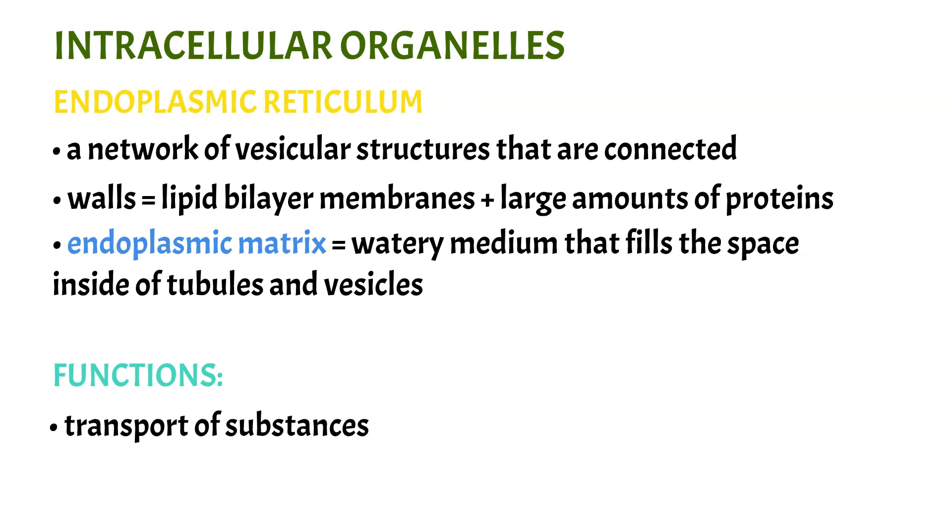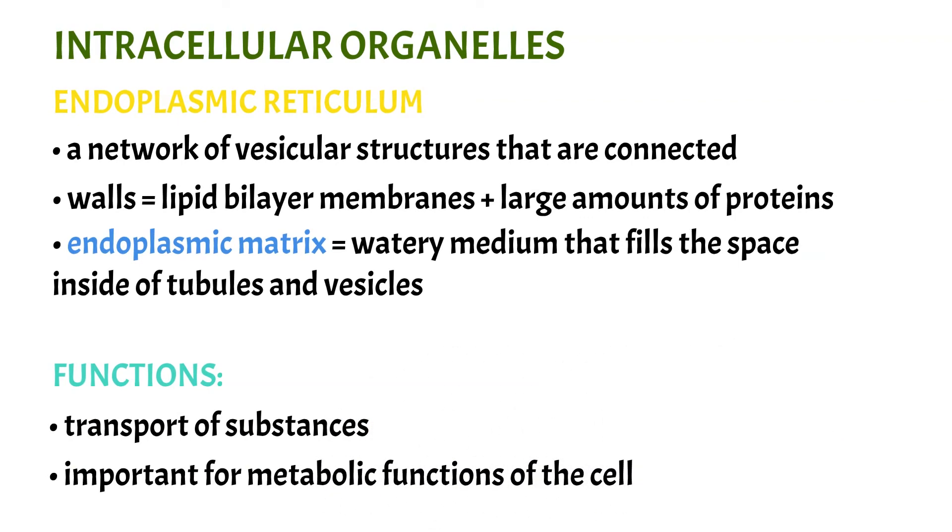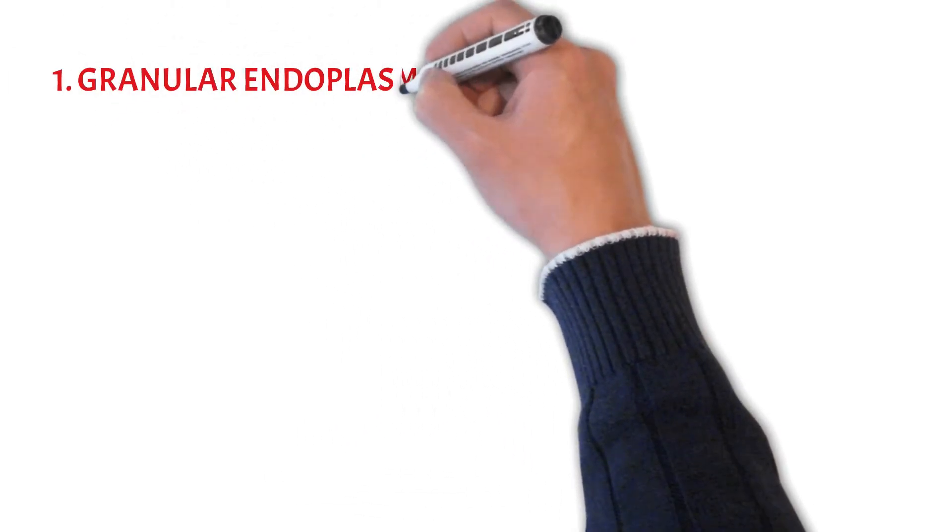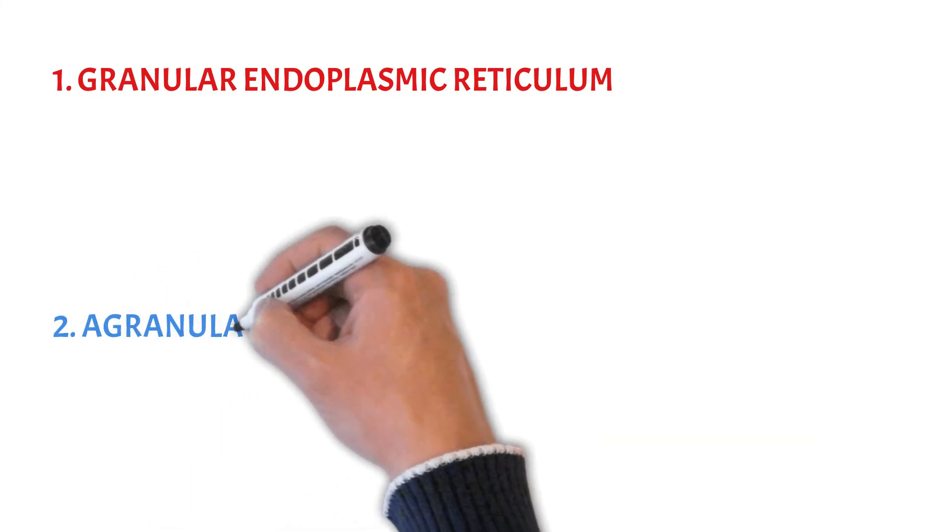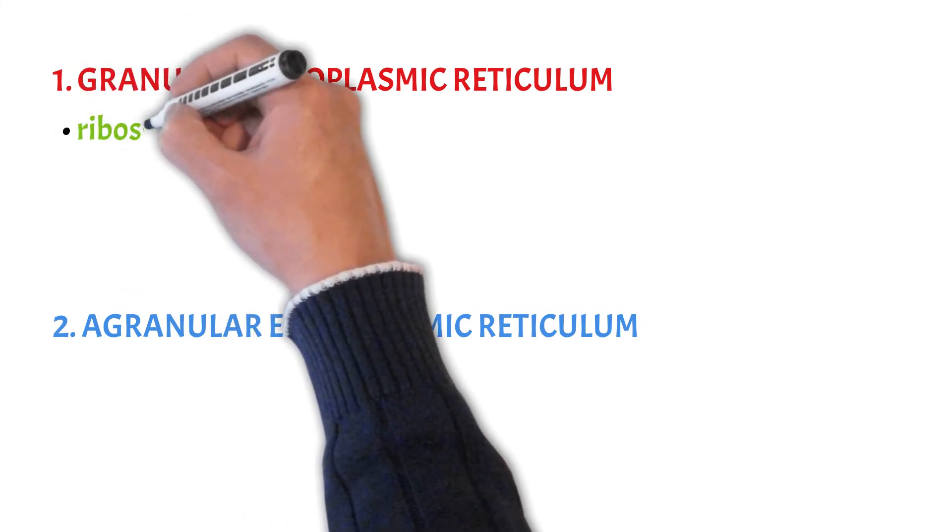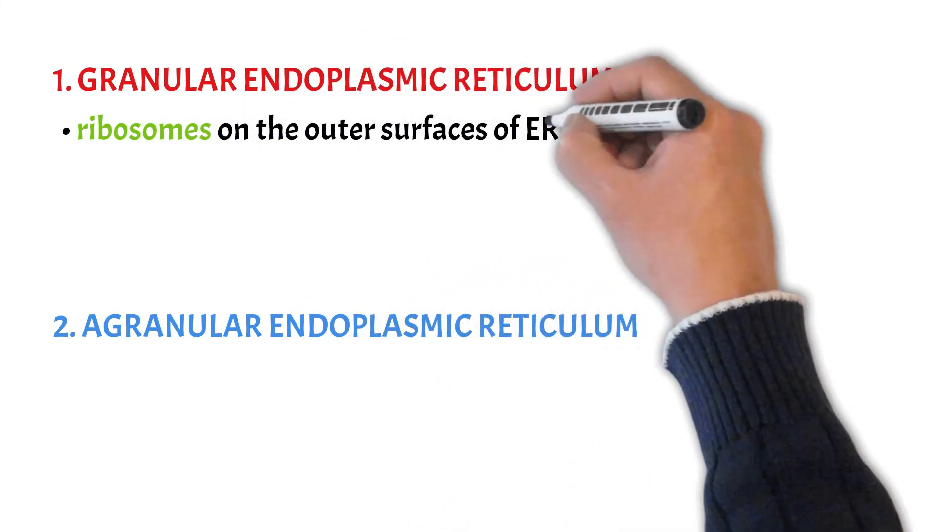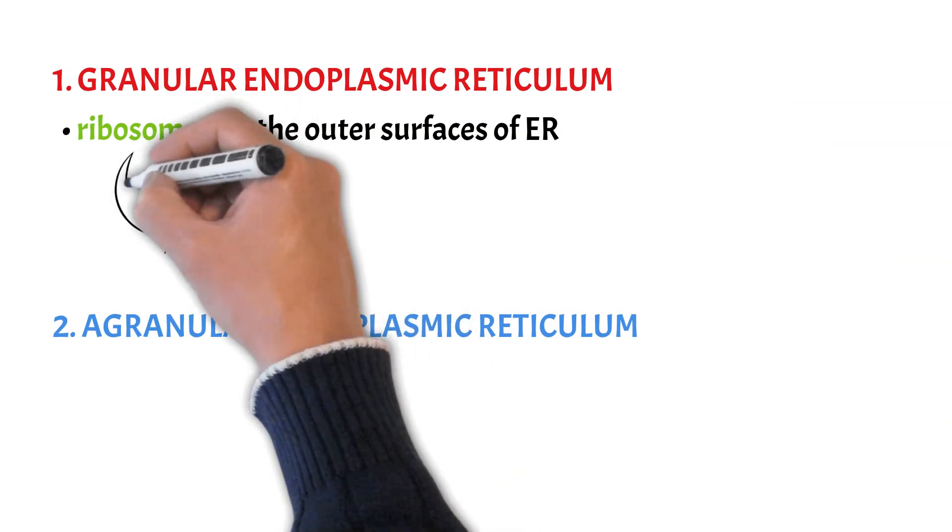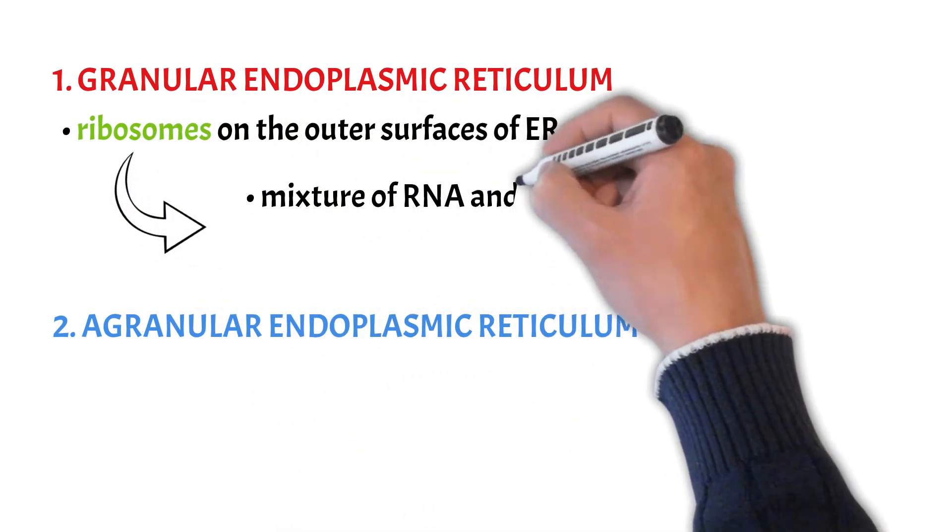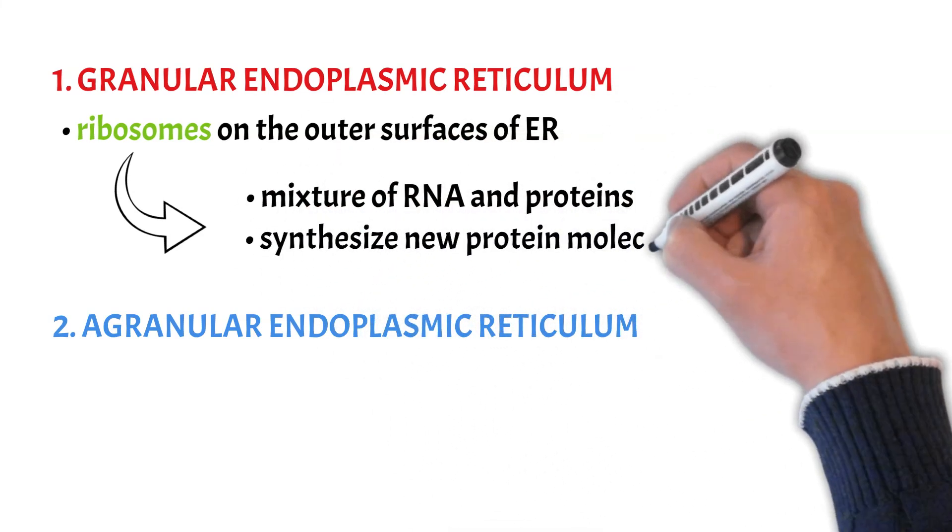Also, endoplasmic reticulum plays a significant role in the metabolic function of the cell. We distinguish two types of the endoplasmic reticulum. The granular endoplasmic reticulum has large number of tiny granule particles that are called ribosomes. These ribosomes are attached to the outer surface of the endoplasmic reticulum and they are composed of a mixture of RNA and proteins. Their function is to synthesize new protein molecules in the cell.